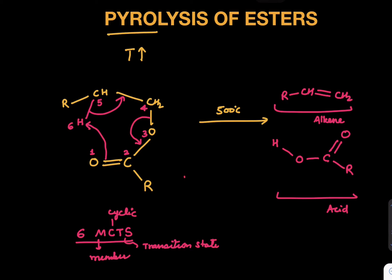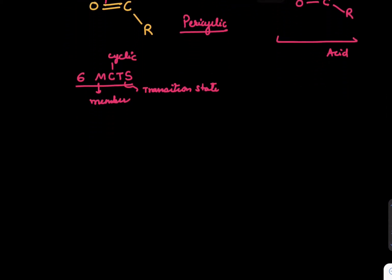We get an acid and we get an alkene. So this reaction can be discussed in preparation of alkene also. This is an example of pericyclic reaction, where we form different ring structures. Diels-Alder 4 plus 2 cycloaddition is also an example of pericyclic reaction.